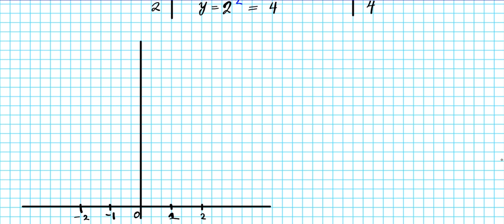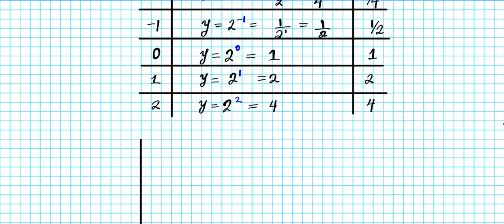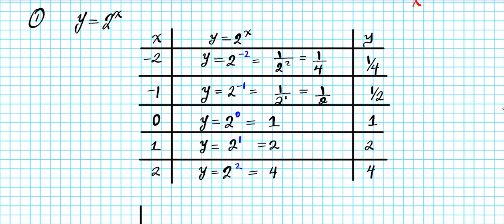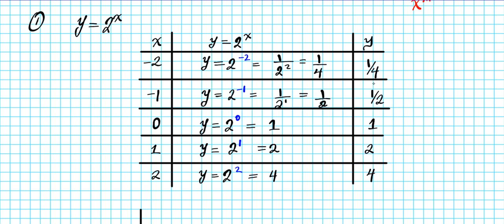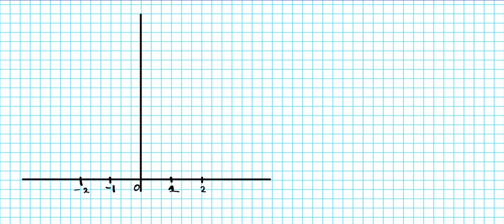That's it for my input values. Now if you take a look at my outputs, the LCD of the denominator is four, so we're going to go by fourths so we can easily graph our fractional terms.